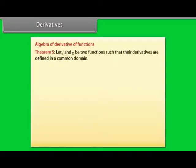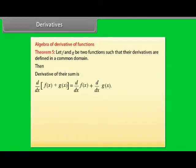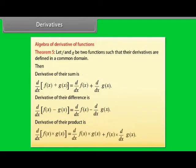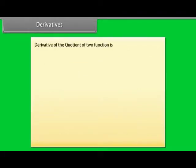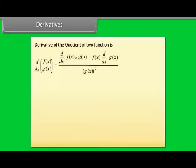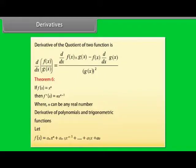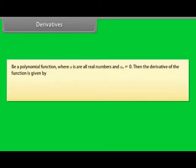Algebra of Derivatives. Let f and g be two functions such that their derivatives are defined in a common domain. Then: the derivative of their sum, derivative of their difference, derivative of their product, and derivative of the quotient of two functions are all defined. Theorem 6: If f(x) = xⁿ, then f′(x) = n·xⁿ⁻¹, where n can be any real number.